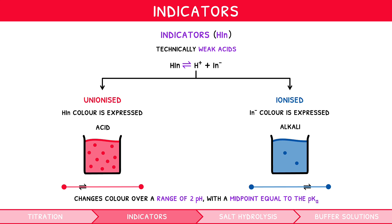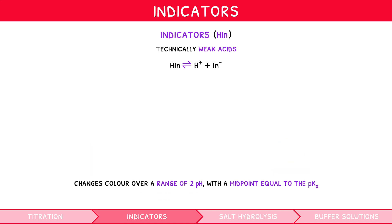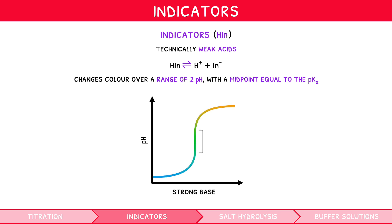There are many different types of indicators, and in the exam you must correctly choose which is required. To do this, ensure that the pH range comes within the steep part of the titration curve, since this is where the equivalence point is located, and that's where you want to observe a color change.